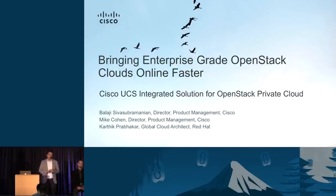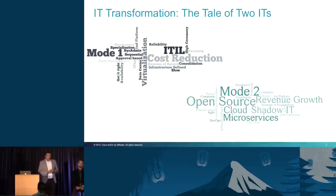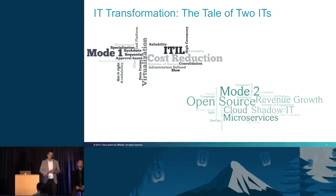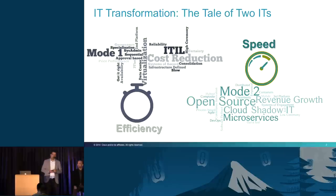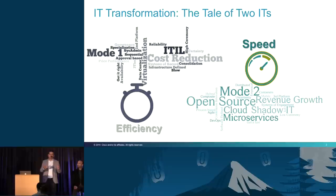The goal is bringing enterprise-grade OpenStack that comes online faster but can also scale over time. One of the key things driving this is the evolution of IT — the transformation happening overall. At Cisco we call it 'Fast IT.' Traditionally, the primary goal was to maintain reliable and stable IT infrastructure, and that's been the case for the last 20 years. But now with the need for a DevOps model, everything needs to move faster.